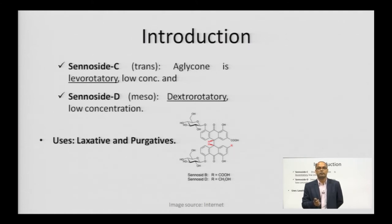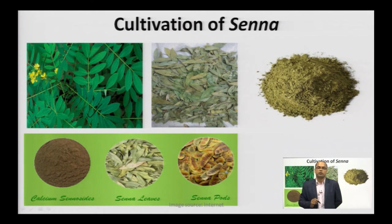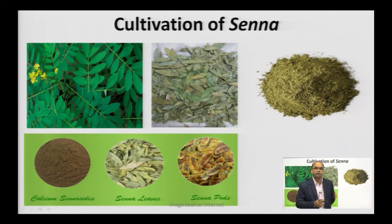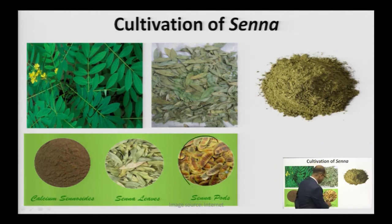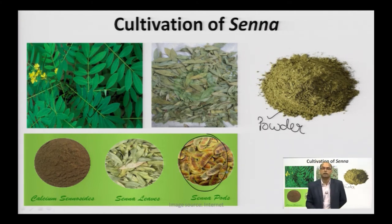Senosides soften your stool and help to pass it out from the intestine. Moving on to the cultivation of Senna, these are the leaves of Senna — Cassia angustifolia. These are found wild in the western part of India, like western Punjab or parts of Sindh and Pakistan. These are dried leaves obtained after drying the senna leaves. You can also use senna pods for the isolation of the phytochemical senoside. You can also see the dried powder of senna from which we can isolate the phytochemical senoside.